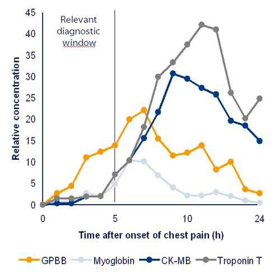In cell biology, a biomarker is a molecule that allows the detection and isolation of a particular cell type — for example, the protein Oct-4 is used as a biomarker to identify embryonic stem cells. In genetics, a biomarker identified as a genetic marker is a DNA sequence that causes disease or is associated with susceptibility to disease. They can be used to create genetic maps of whatever organism is being studied.